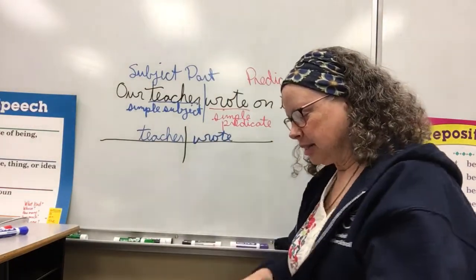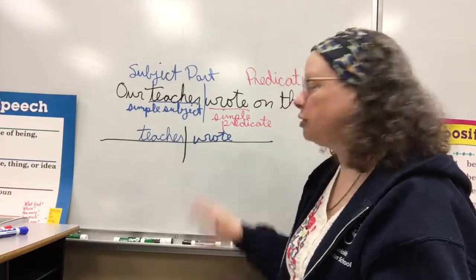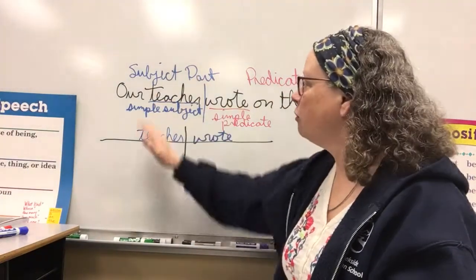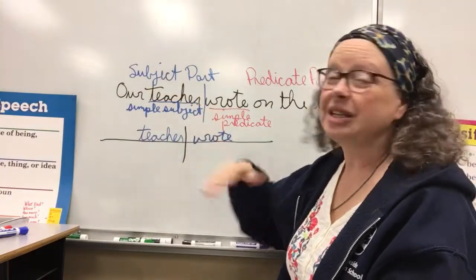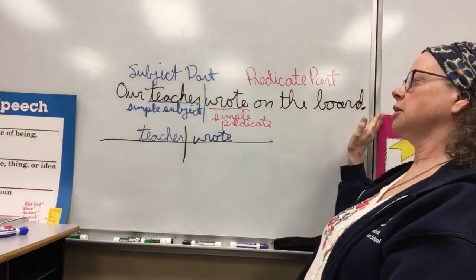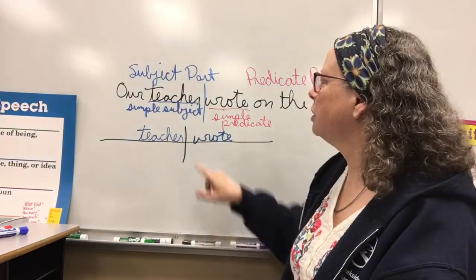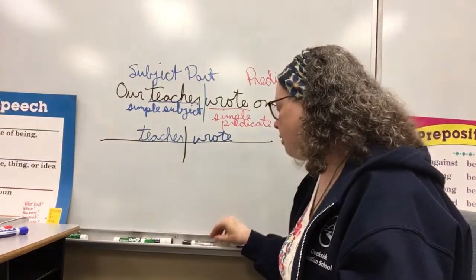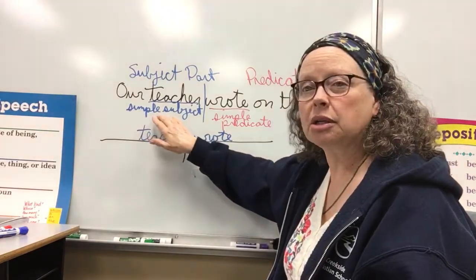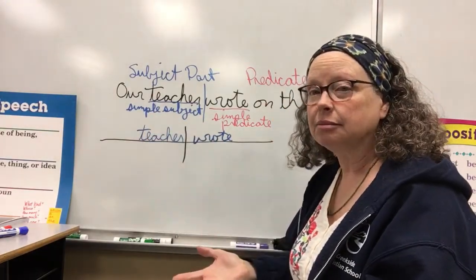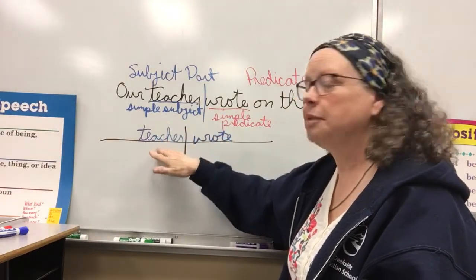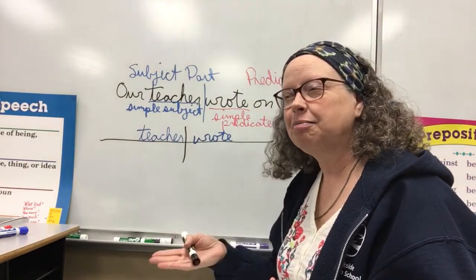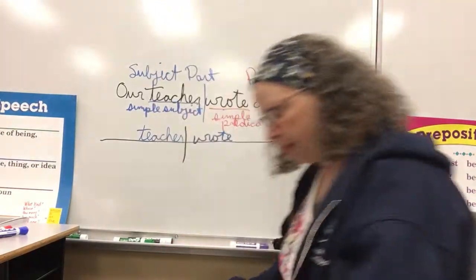That takes us to page 271, which talks about fragments. Every sentence has a subject part and a predicate part, and we can bring it down further to a simple subject and simple predicate and diagram it. Now, if you have a sentence that has only a subject and no predicate, it's a fragment. And if it has only a predicate and no subject, it's also a fragment. You need both a predicate and a subject in every sentence.